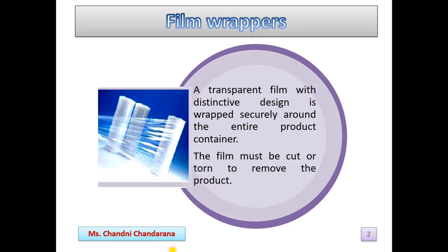First is the film wrapper. From this picture it is very clear how it looks. A transparent film with a distinctive design is wrapped securely around the entire product container. The film must be cut or torn to remove the product. The wrapper must have an identifying characteristic — for example, a name, a registered trademark, logo, or a picture that cannot be readily duplicated.